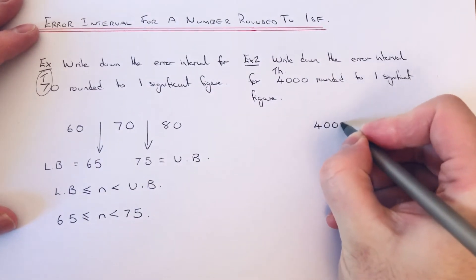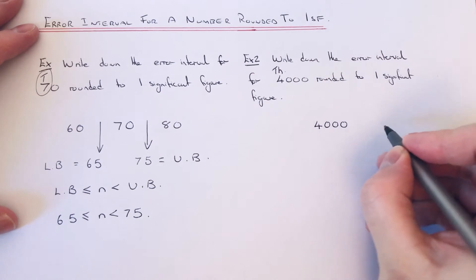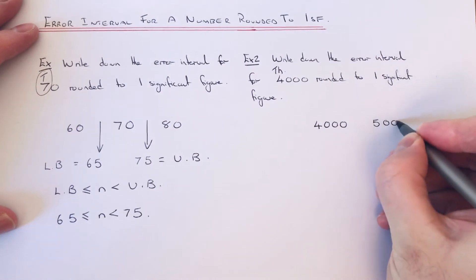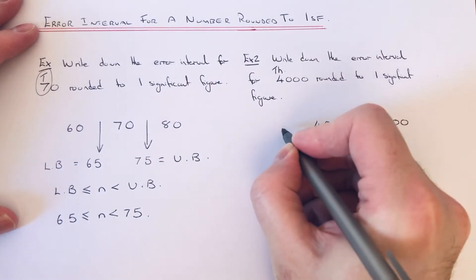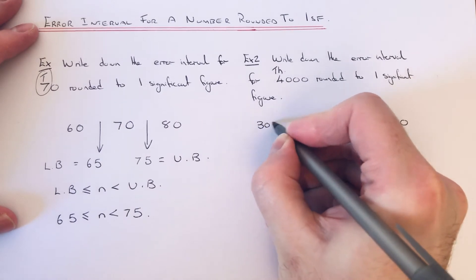So if we write 4,000 down, the number above 4,000 on the scale would be 5,000, and the number before 4,000 will be 3,000.